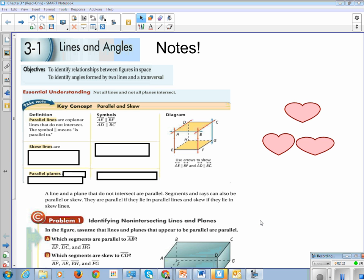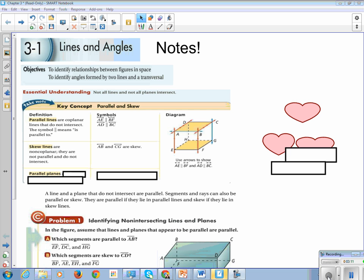These poor lines that usually get forgotten are skew lines. Skew lines are non-coplanar. They are not parallel, and they do not intersect. So they're both non-parallel, but they don't intersect ever. We're looking at AB, which is this front line right here, and CG, which is this back line. So AB is in the front, CG is in the back. They are skew.